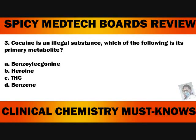Number 3. Cocaine is an illegal substance. Which of the following is its primary metabolite? A. Benzolactanine. B. Heroin. C. THC. Or D. Benzene. The answer to number 3 is letter A, Benzolactanine.